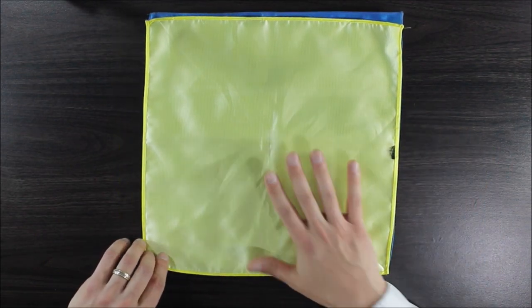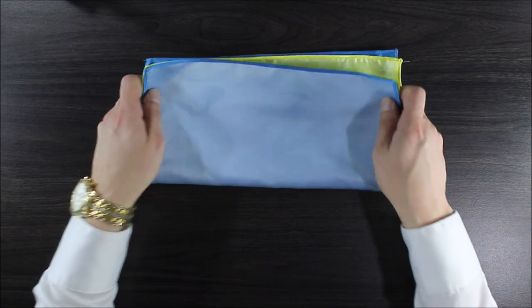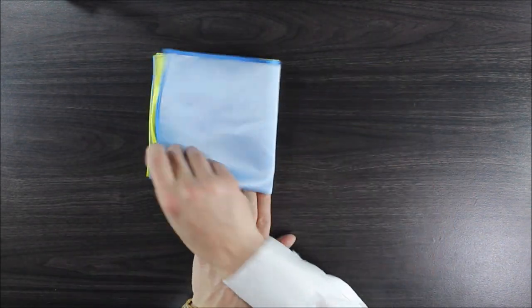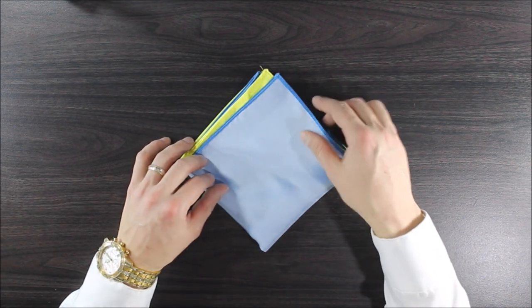Once you've got your two pocket squares laid on top of each other, you're gonna fold it into a rectangle and then again into a square with all the open ends facing up.